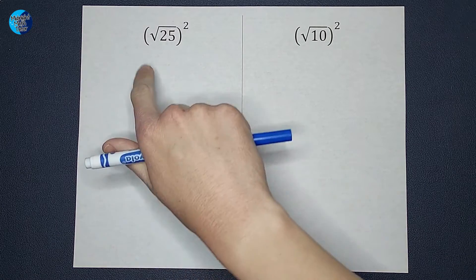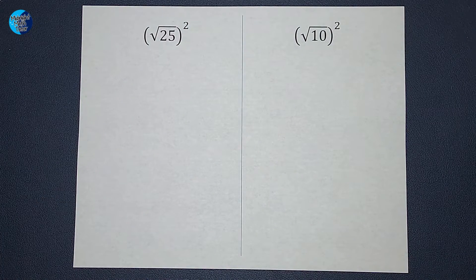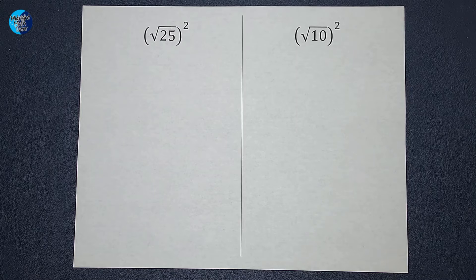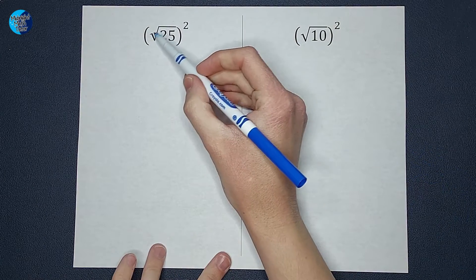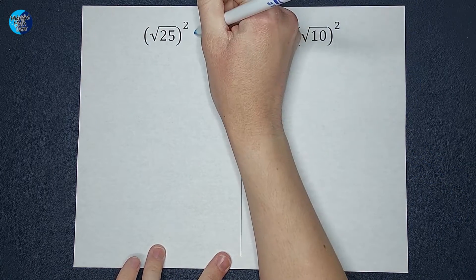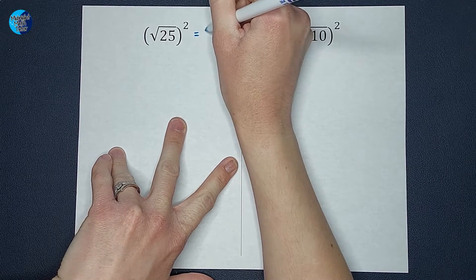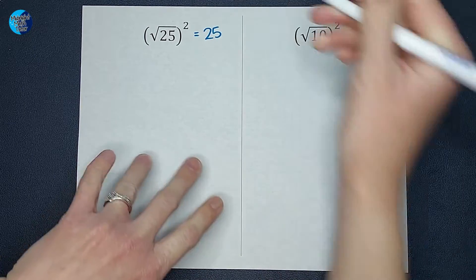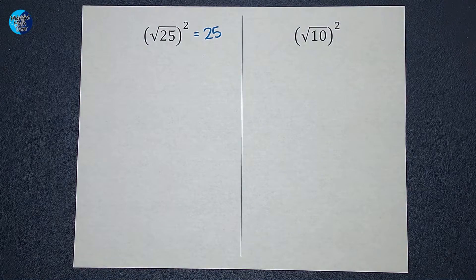Hey guys, if you have been working with square roots and squaring things, you've probably been told when you square something with a square root, those cancel and you are just left with whatever number is underneath. So in this case, 25. In this video, we're going to show you why that is the case.